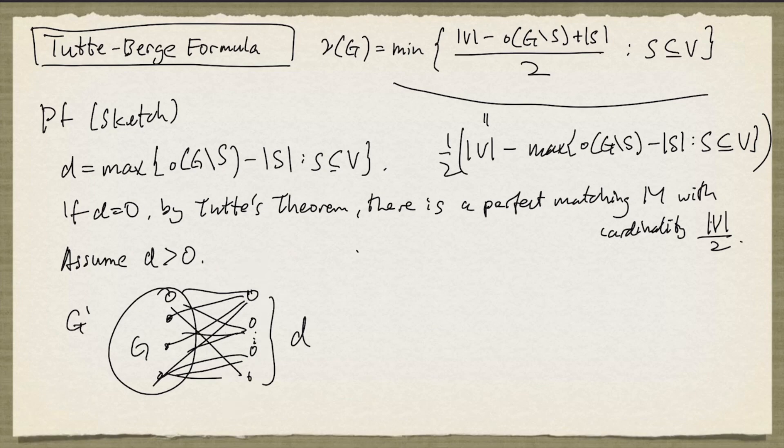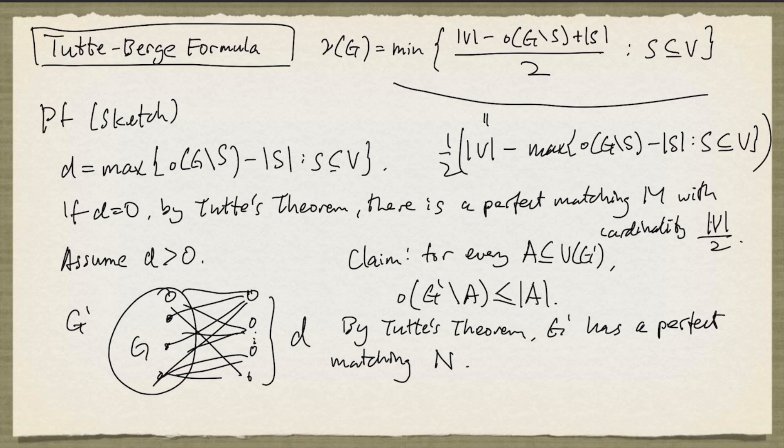So the claim is that for every subset of nodes A of this graph G', the number of odd components of G' drop A is at most the cardinality of A. And once this claim is established, we can apply Tutte's theorem and conclude that G' has a perfect matching. And we'll call it N.